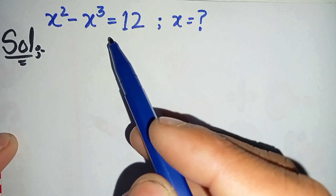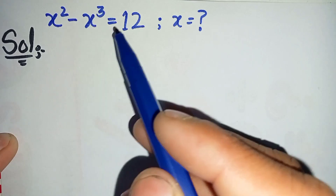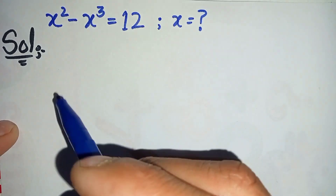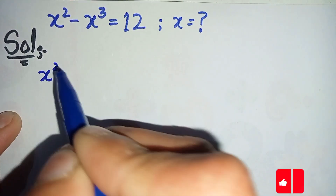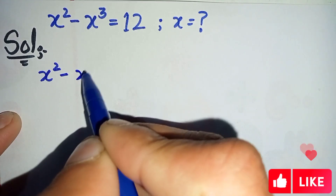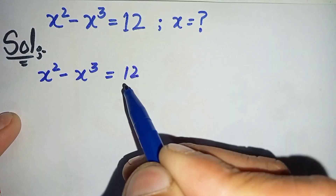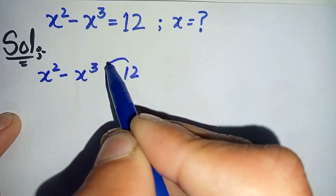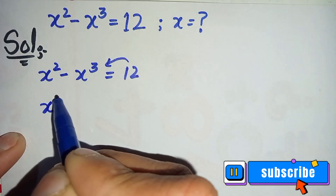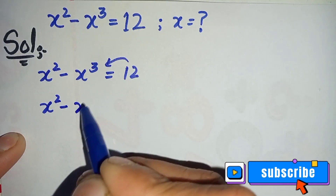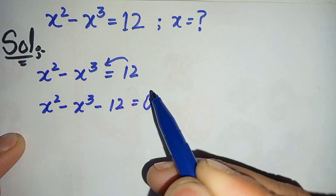To solve this equation properly and step by step, we write the question: x squared minus x cubed is equal to 12. First, we shift 12 to the left-hand side, so it becomes minus 12. The equation becomes x squared minus x cubed minus 12 is equal to 0.